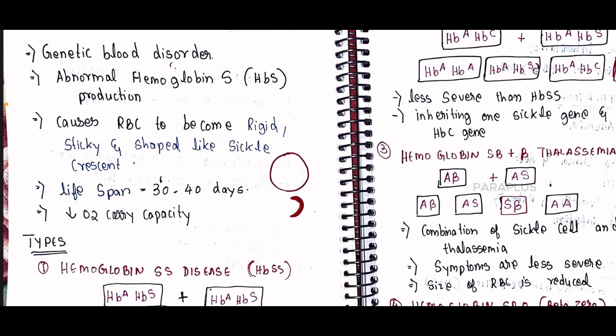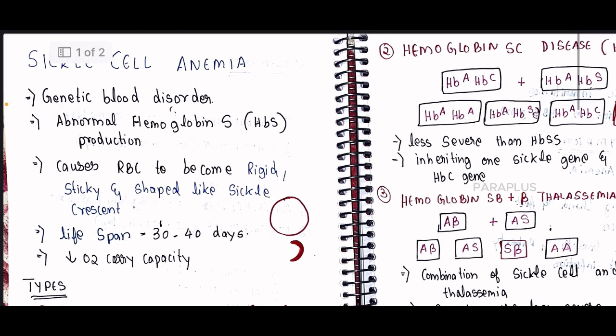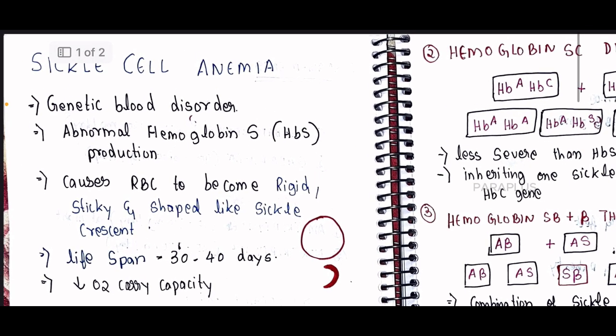The cell does not have a proper structure. This is a genetic disorder. The abnormality is in the hemoglobin. It produces an abnormal hemoglobin called HbS — hemoglobin S. When HbS is produced abnormally, it causes a problem.